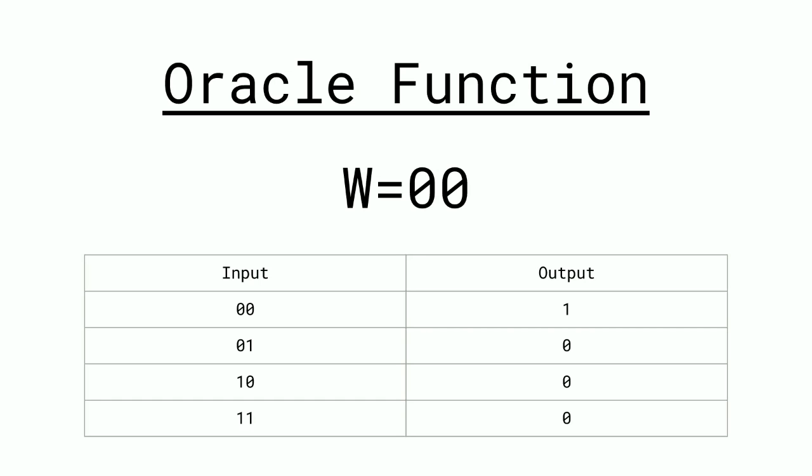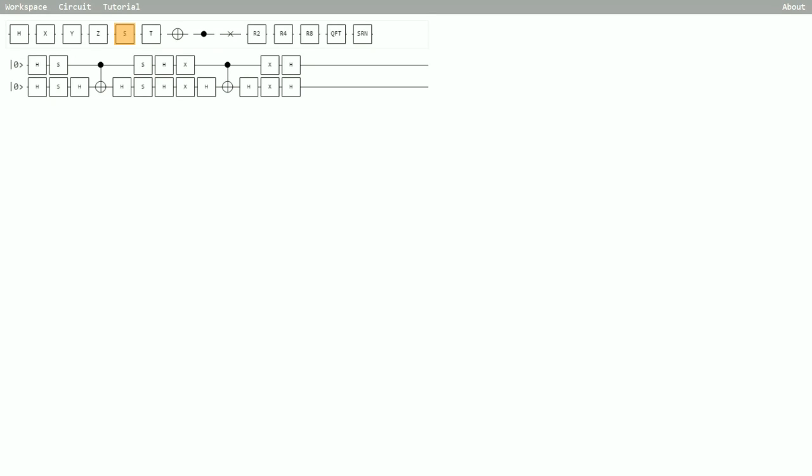So let's look at an implementation of this on the simulator. Here we have a simple circuit implementation for solving Grover's algorithm. And what this is doing is it's searching for the input 00, which is what we were examining in the last slide.